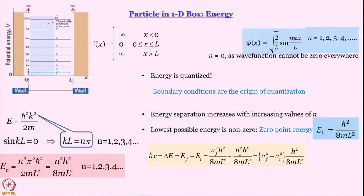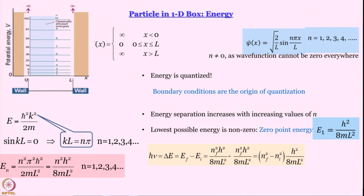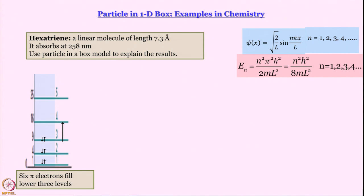For a transition from level i to level f, ΔE = (n_f² − n_i²)·h²/8mL². For successive levels (f = i + 1), the energy gap is proportional to 1/L². This energy gap decreases as L increases, since L² appears in the denominator. A larger box means smaller energy gaps — this has profound implications in chemical systems.